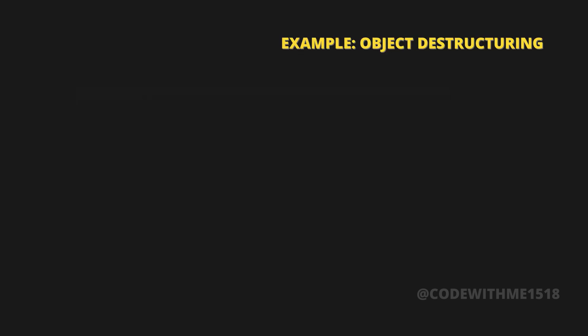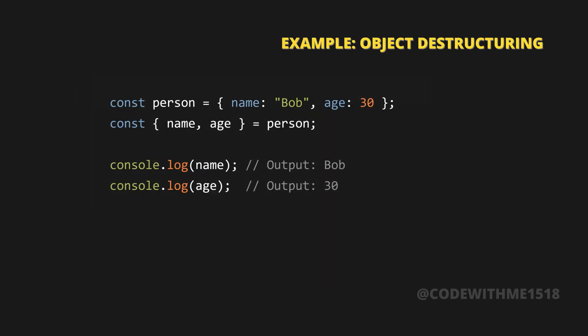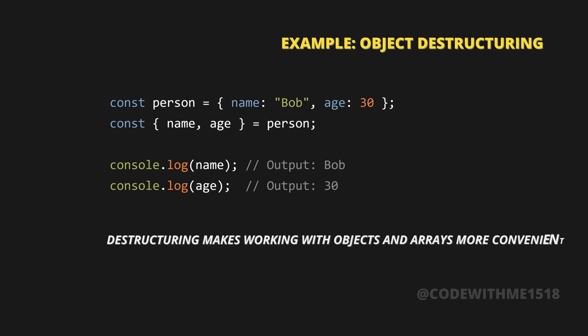Object destructuring example: const person = { name: 'Bob', age: 30 }; const { name, age } = person; console.log(name); — Output: Bob. console.log(age); — Output: 30. Destructuring makes working with objects and arrays more convenient.